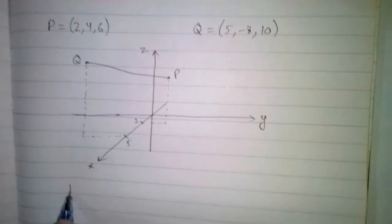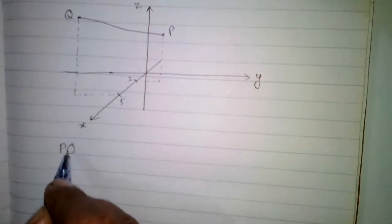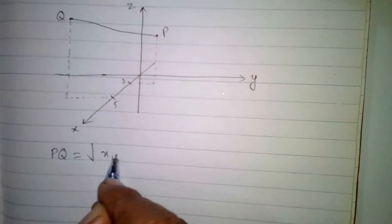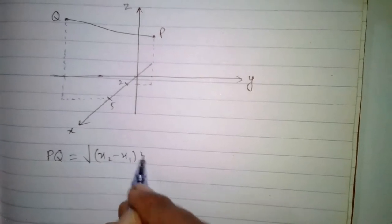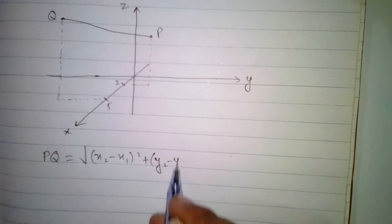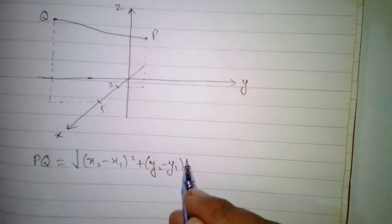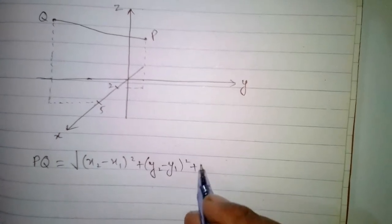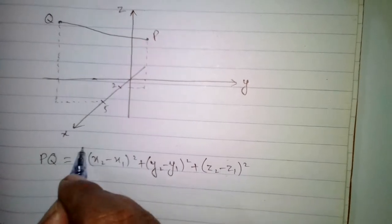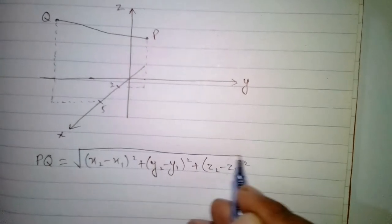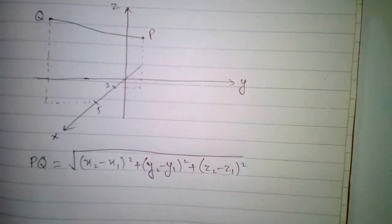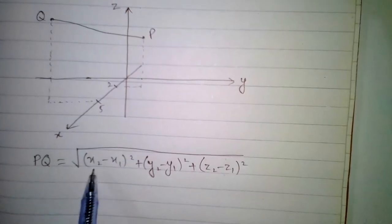In order to find this distance we will use the formula: the square root of (x2 minus x1) squared plus (y2 minus y1) squared plus (z2 minus z1) squared.